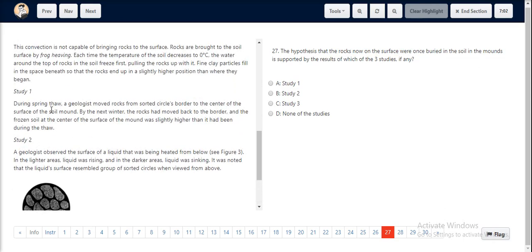In study 1, we see that the geologist moved rocks from the sorted circle border to the center of the surface of the soil mound, and by the next winter the rocks had moved back to the border. The surface of the mound was slightly higher than it had been during the thaw.